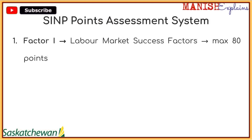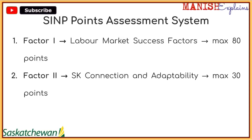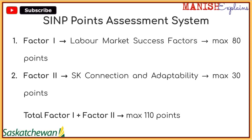This point assessment system has two factors. There is Factor 1, which is a labor market success factor, where a candidate can score up to a maximum of 80 points. Then there is Factor 2, which is Saskatchewan connection and adaptability, where you can score up to a maximum of 30 points. The total in this point assessment system is a maximum of 110 points. Please note this is not related in any way to the Express Entry point system — this is a totally independent point system from Saskatchewan.